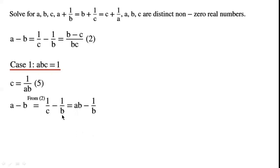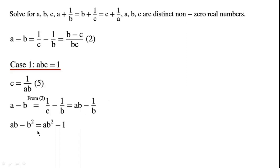From equation 2, we can write 1 over C as AB. To remove any fractional terms, we can now write AB minus B squared equals AB squared minus 1.